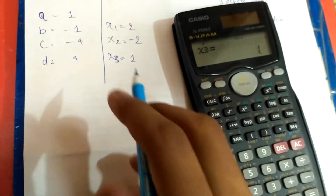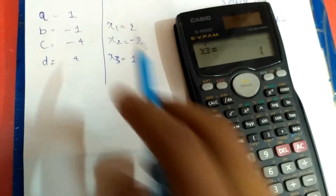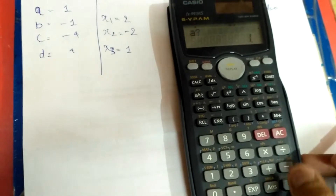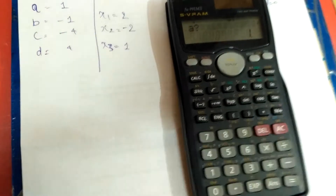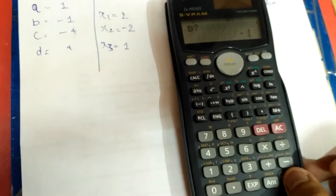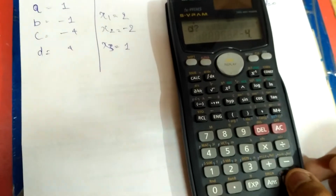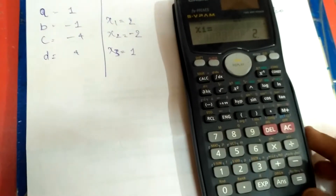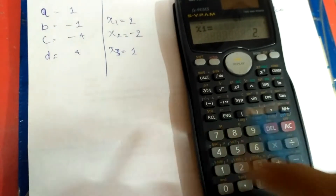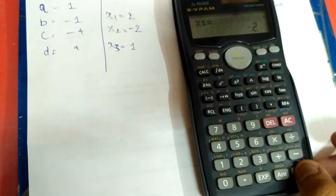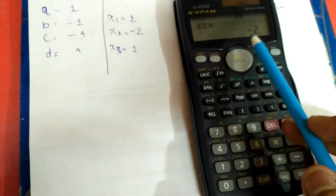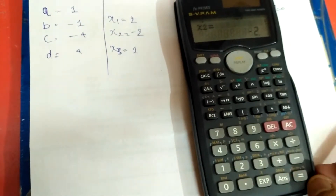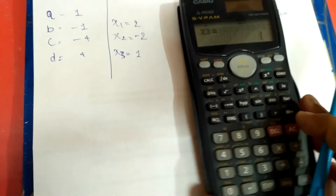If you want to check the values again — suppose you didn't write down the previous value — press this button again and it lets you rewind your whole input, showing again x1 equal to 2, x2 equal to minus 2, and x3 equal to 1.